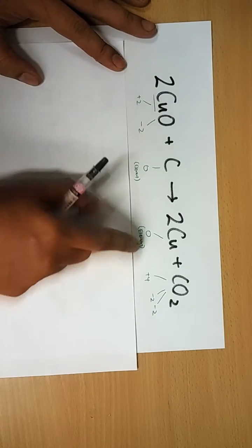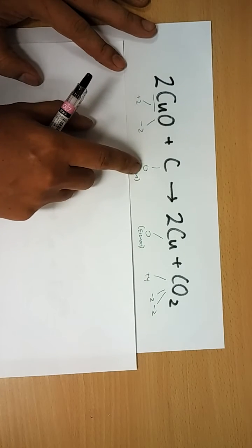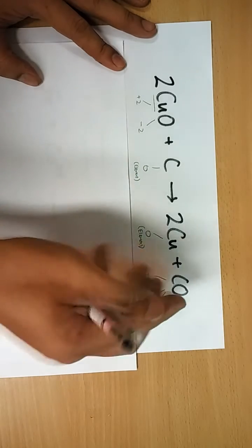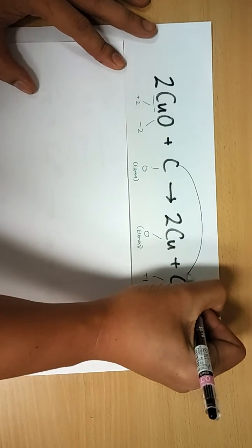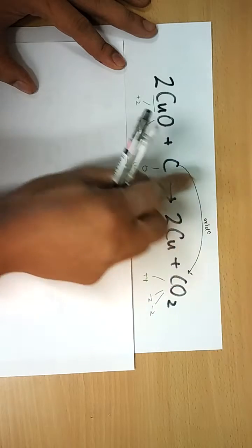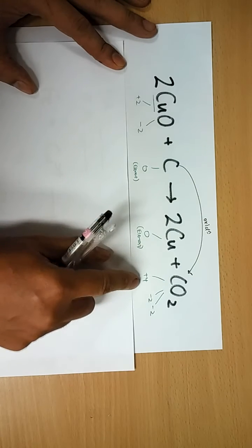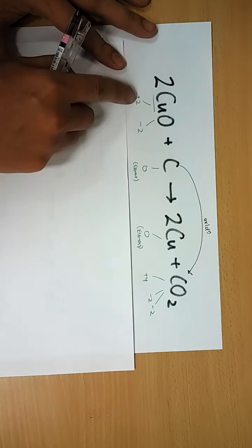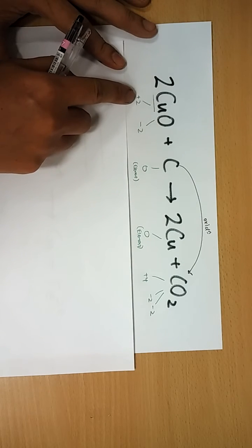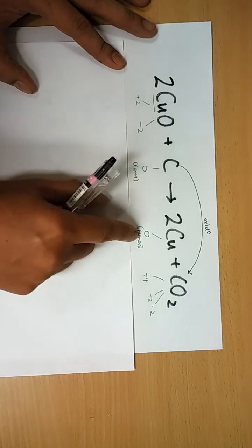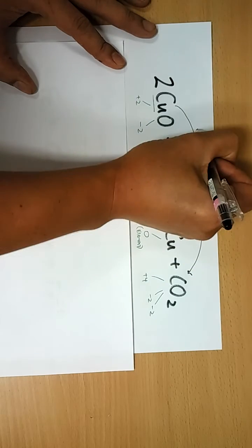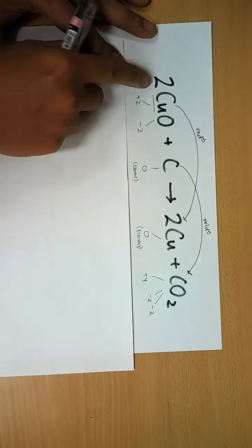Looking at carbon: it starts at 0 and after the reaction it has become plus 4. So this is oxidation — from 0 it has become plus 4. For copper oxide, copper is plus 2 but copper has become 0. So this is reduction.